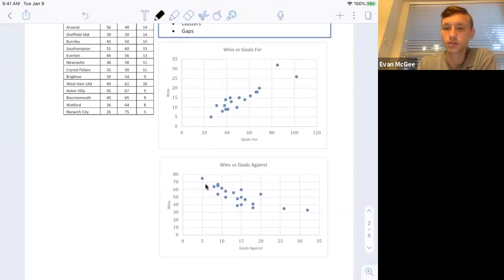So describing this relationship, this one appears to be negative is the direction. The strength looks moderately strong. The form, this one actually looks like it might be a little bit curved. So it'd be hard to say that this one's linear.